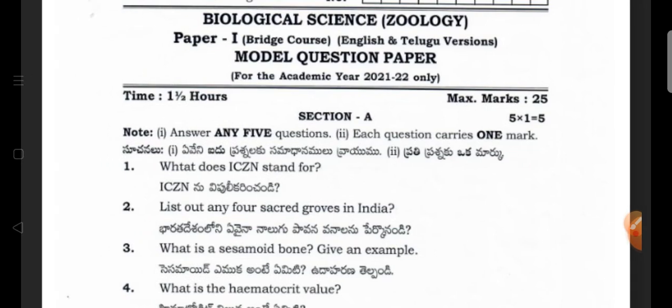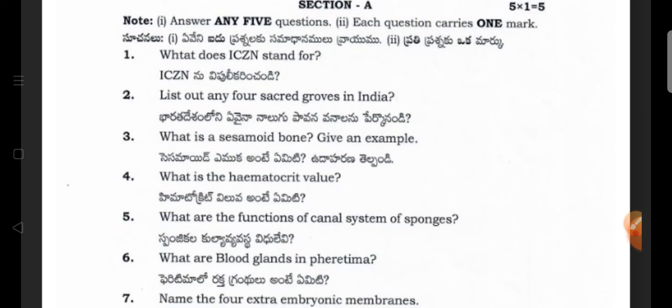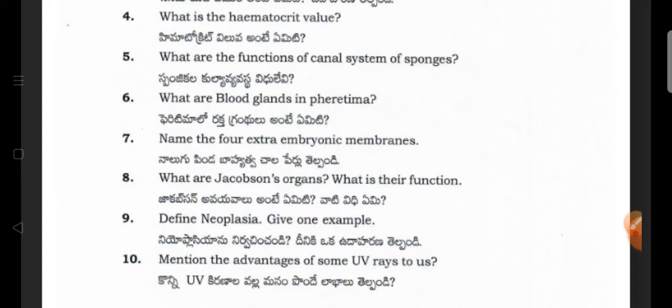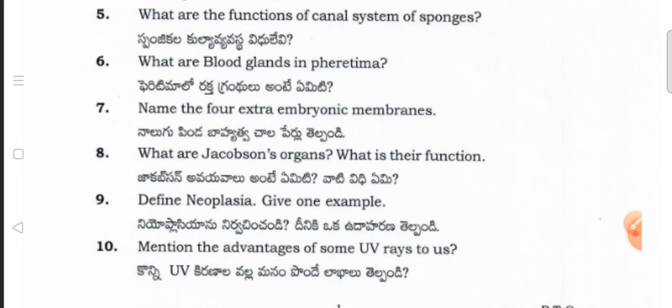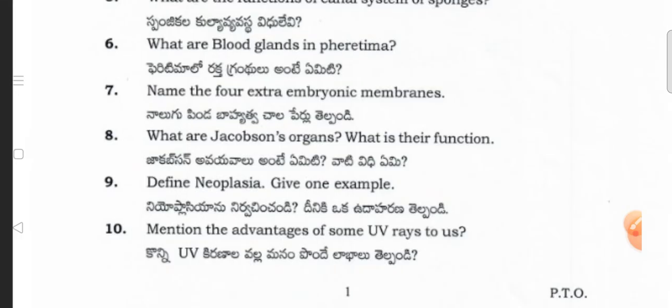This is botany: Section A five marks, Section B twenty marks, overall 25 marks. Now for zoology Section A questions: What is IC in Stanford? List out any four sacred groves in India. What is a sesamoid bone — give an example. What is hematocrit volume? What are the functions of the canal system in sponges? What are blood glands in Pheretima? Name the four extraembryonic membranes. What are Jacobson's organs and what is their function? Define neoplasia and give an example. Mention the advantages of summer UV radiation.